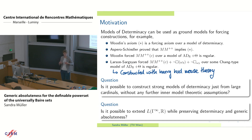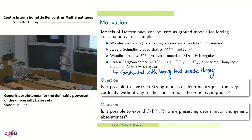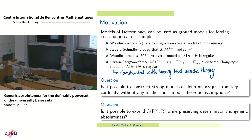What is the base model for this? The more precise question for today's talk is whether it's possible to extend the model L(Γ∞, ℝ) — we take all the universally Baire sets, the reals, and we construct over them — and ask: can this be a model of determinacy, can we get an even larger model of determinacy of this form, and can we get generic absoluteness results for this model?